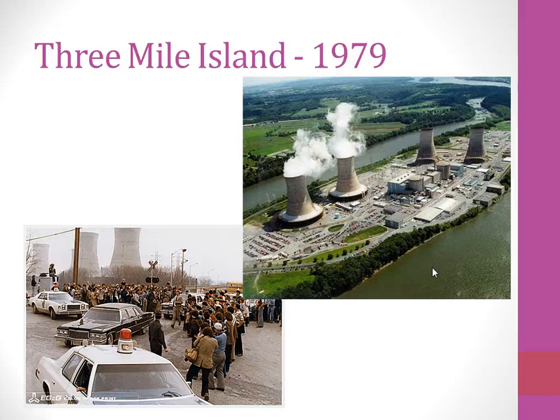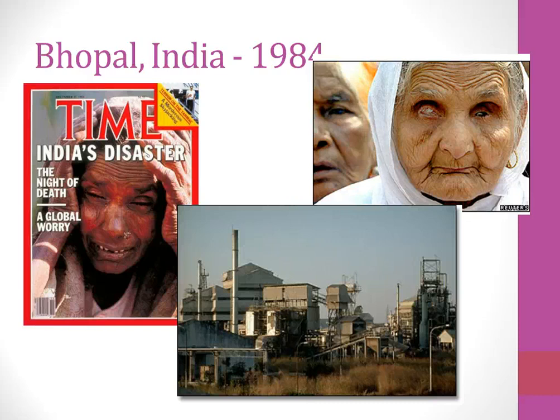Ever since Three Mile Island, we had a moratorium on building nuclear power plants. Bhopal, India, occurred in 1984 and is the worst industrial disaster ever in the world. A chemical factory exploded in the middle of the night, releasing toxic gases that killed many people instantly. Those who survived awoke to thousands dead, and many more suffered birth defects and cancers — chronic effects that appeared long after the acute disaster.